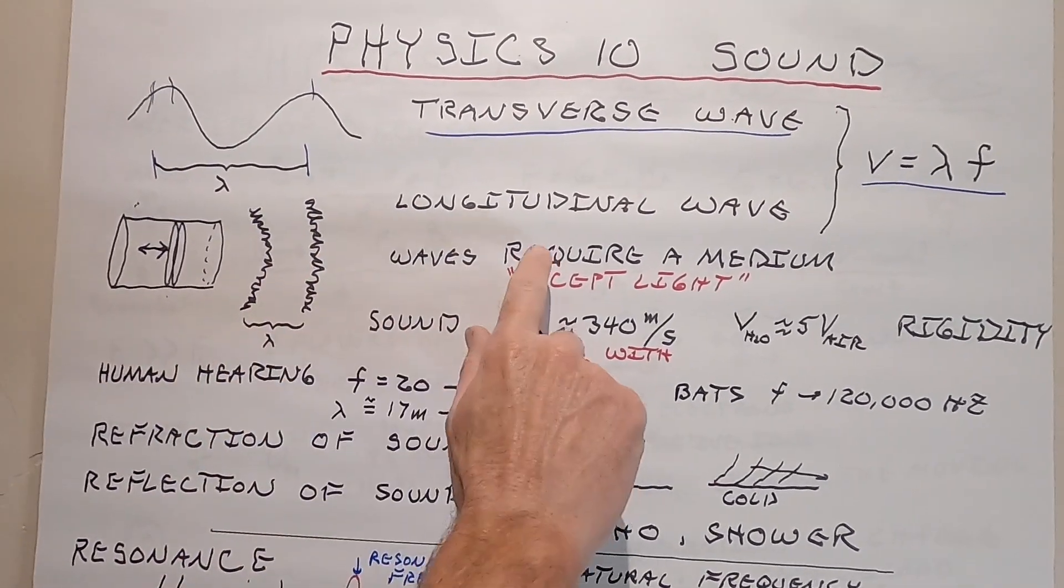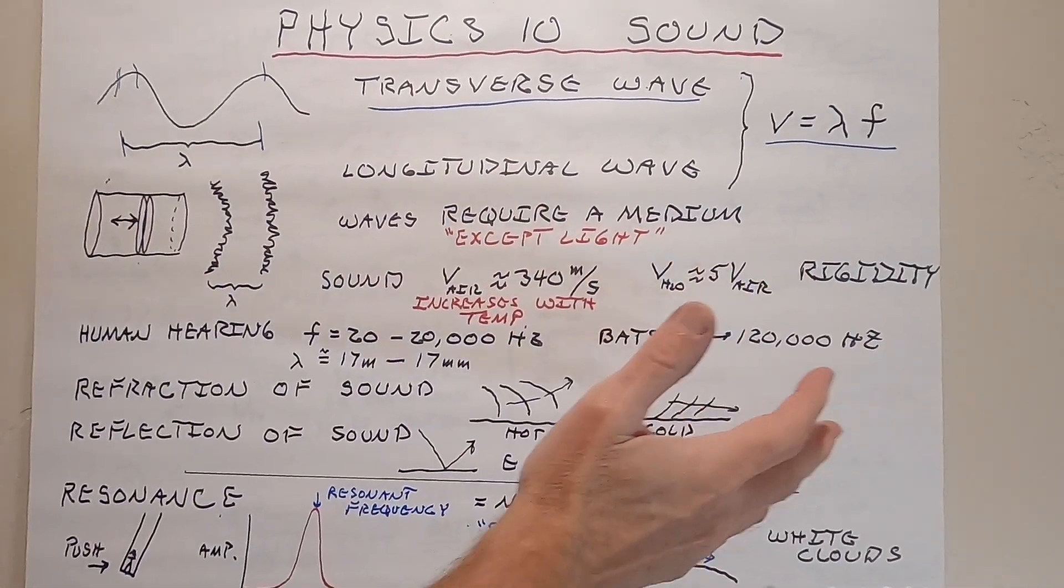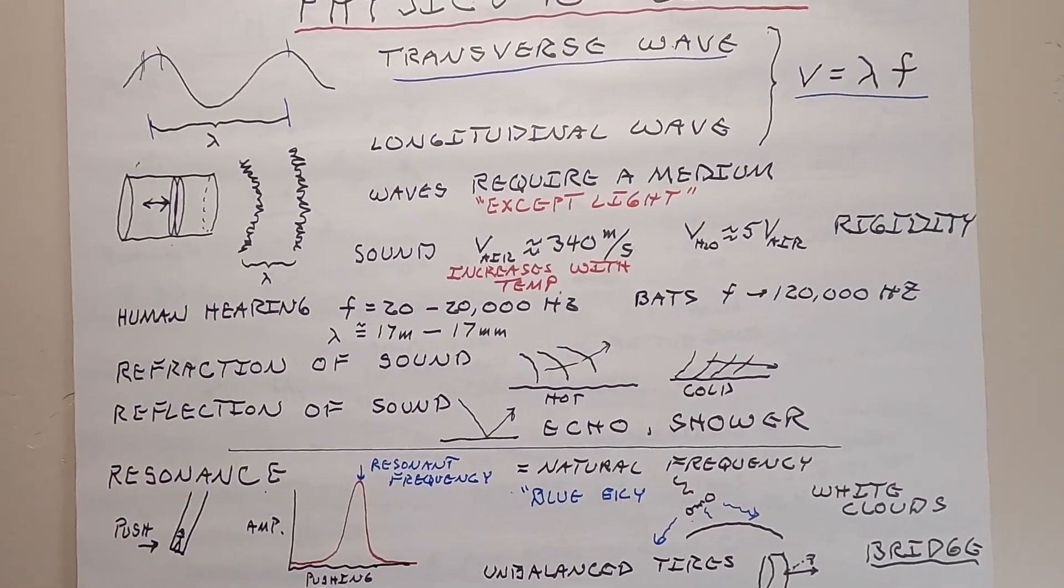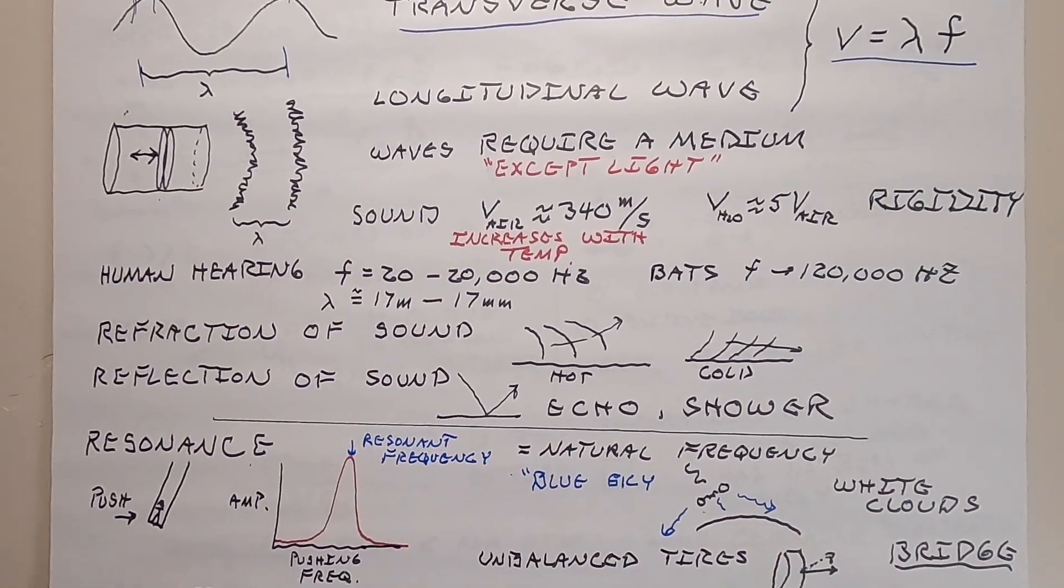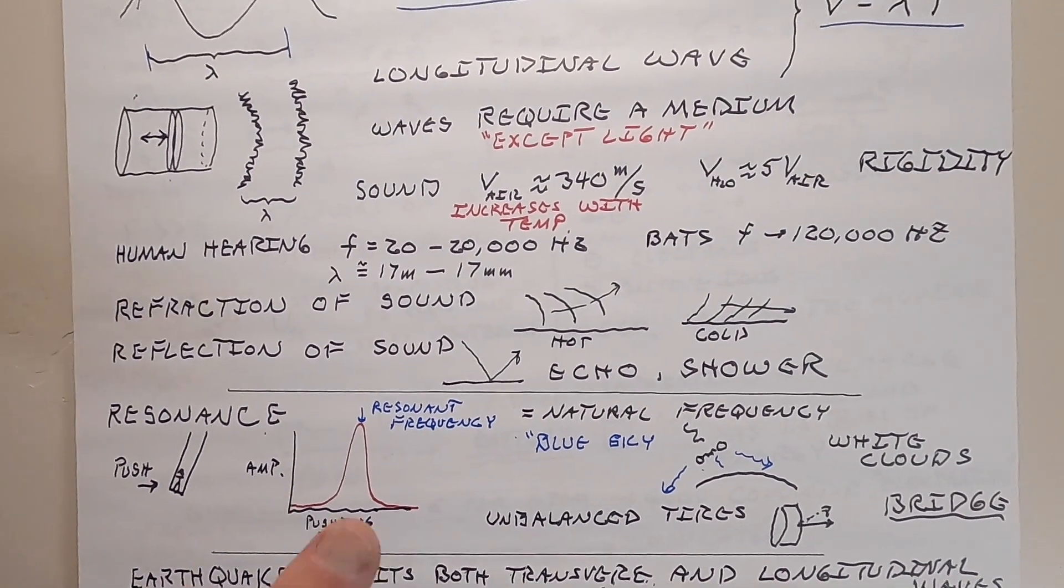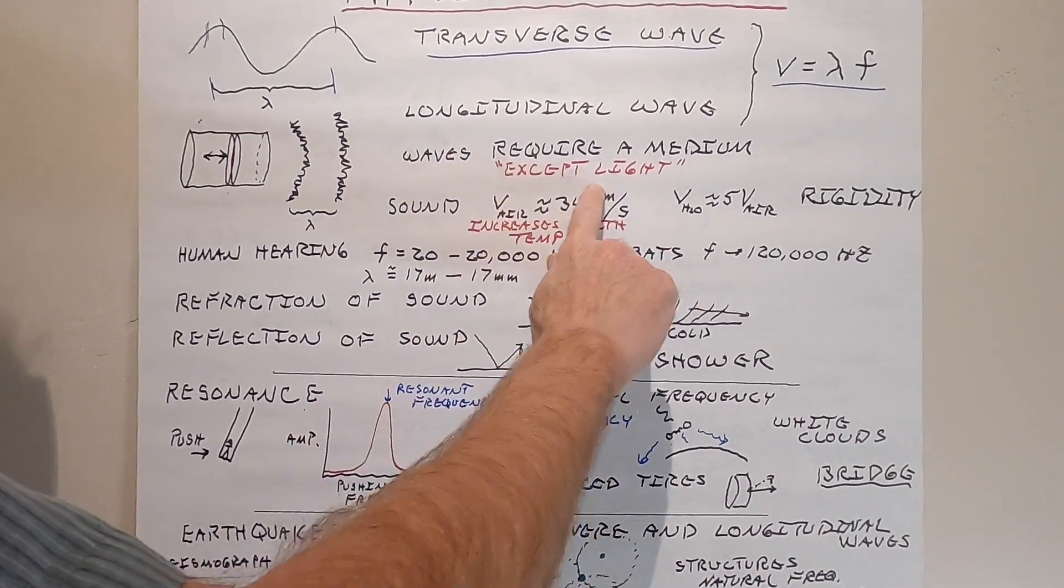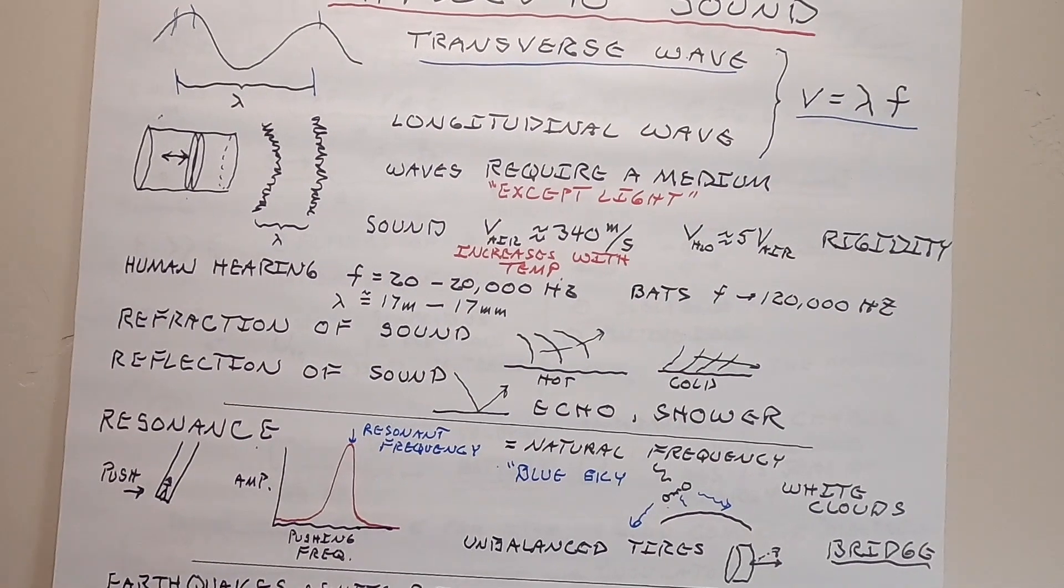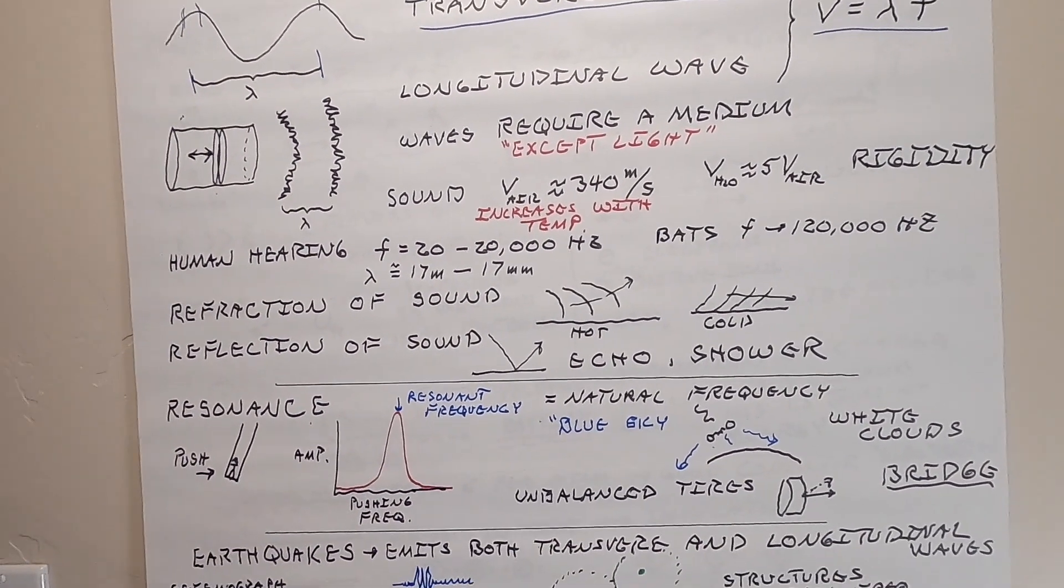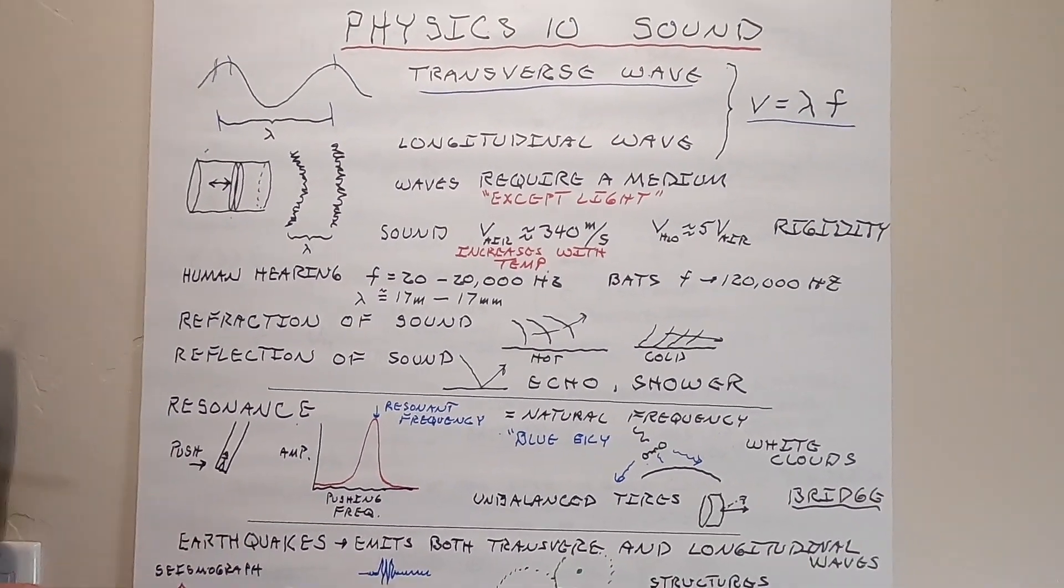Sound requires a medium in which to travel. It needs air to travel through. It needs the ground, dirt. It needs some material to transmit this wave. It would not work in a vacuum. If you're on the moon, someone's yelling at you right next to you, you won't hear them. You'll be able to see them. Light doesn't require a medium. That's the strange thing. We can see the sun, and there's nothing between us and the sun. It's a vacuum. But if the sun made noise, we would not hear it.